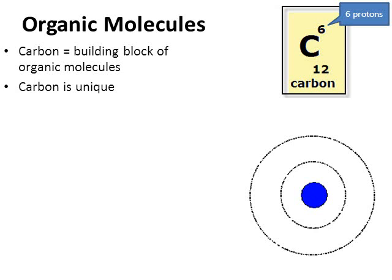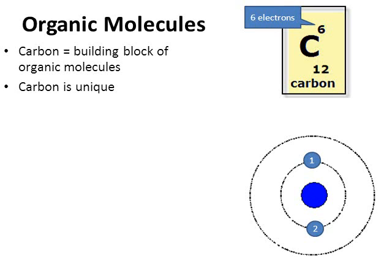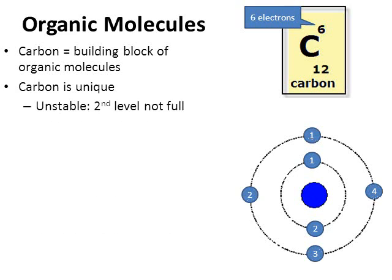Carbon has six protons, which means it also has six electrons. The second level of electrons needs a total of eight, but carbon only has four electrons in the second level. So carbon is unstable, and because it's unstable, it's going to bond up to four different times. That's what makes carbon unique — most atoms do not bond four times, but carbon does.